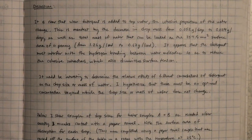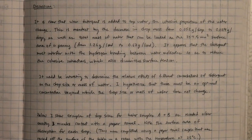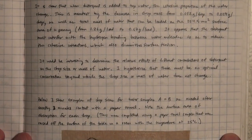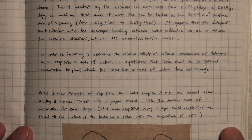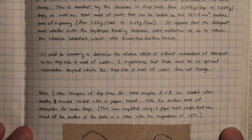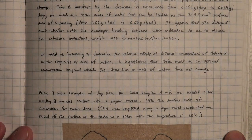It appears that the detergent must interfere with the hydrogen bonding between the water molecules so as to reduce the cohesive interactions, which also diminish the surface tension. It would be interesting to determine the relative effects of different concentrations of detergent on drop size or mass of water, and I hypothesize that there must be an optimal concentration beyond which the drop size or mass of water does not change.